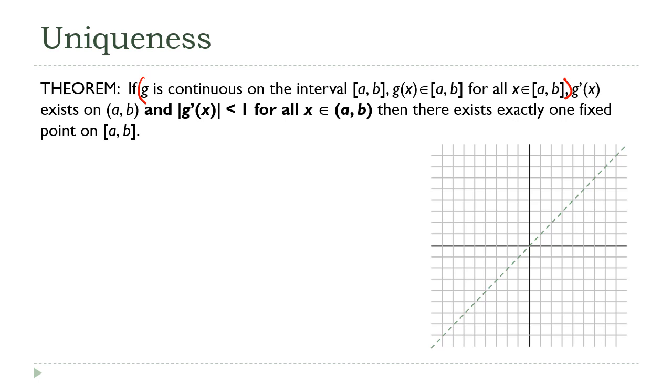Everything in here is just setting up that same box that we were talking about in the existence theorem. The new part here is that I'm also going to require that the derivative has to be less than one for every point on the interval. So how does that show uniqueness? Well let's do this.